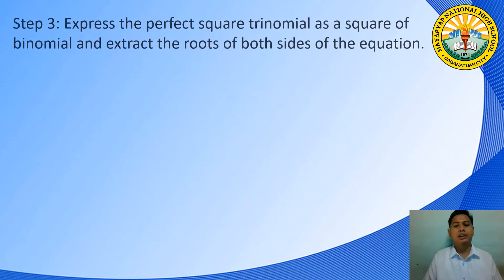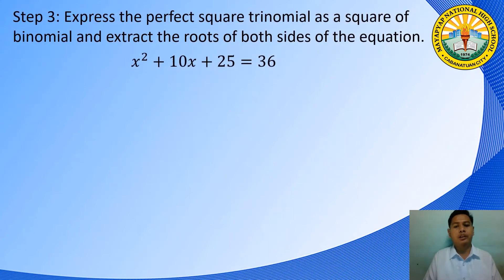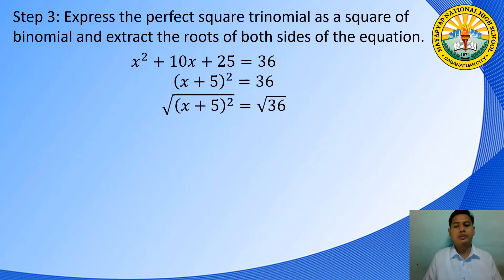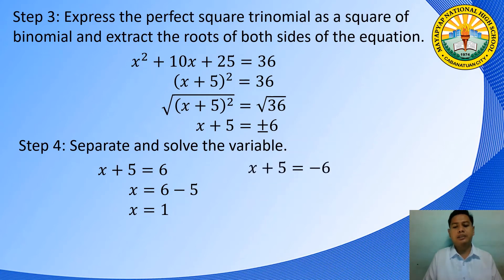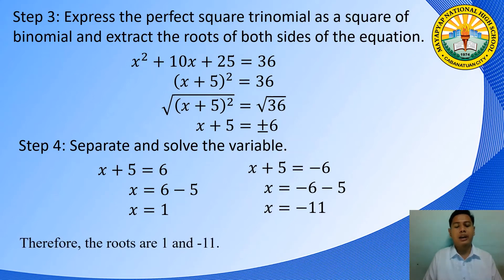Step 3: express the perfect square trinomial as a square of a binomial. By factoring, the quantity x plus 5 squared is equal to 36. Then extract the roots of both sides: x plus 5 is equal to positive or negative 6. Step 4: separate and solve for the variable. For x plus 5 equals 6, x equals 1. For x plus 5 equals negative 6, x equals negative 11. Therefore, the roots are 1 and negative 11.